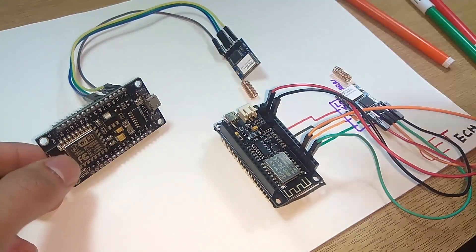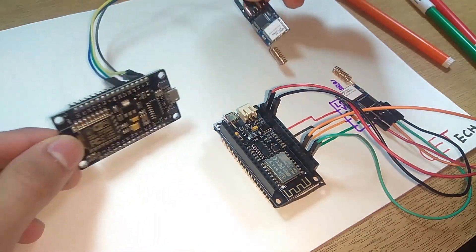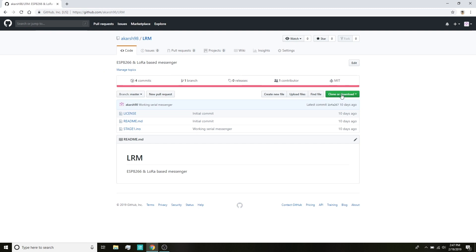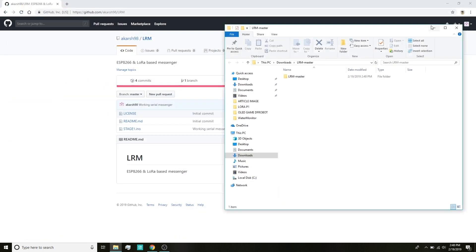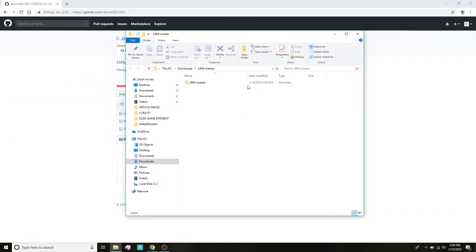Now moving on to the code side, I'll add a GitHub link for the code that I have written. Navigate to that GitHub link and download the entire repository. The GitHub repository is named LRM. We need to use the stage one code for this. When the file is downloaded, you need to open the file, unzip it, and then open the .ino file that is present in that folder.